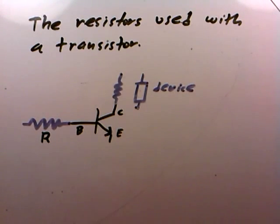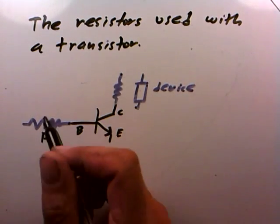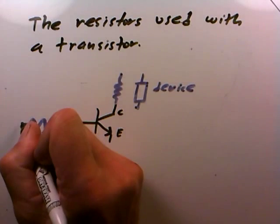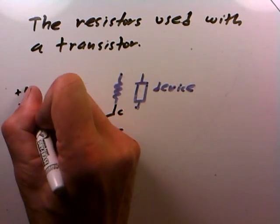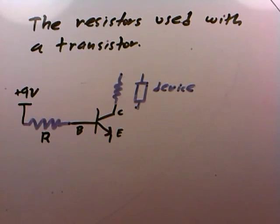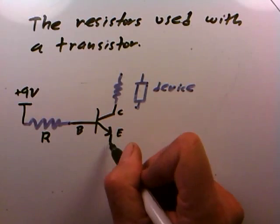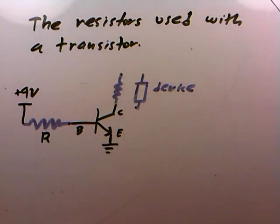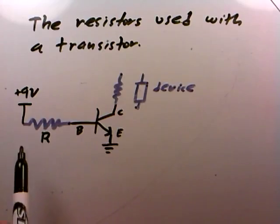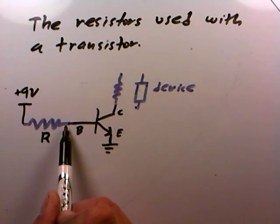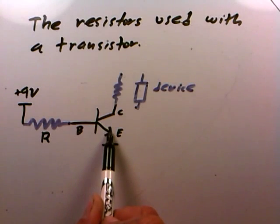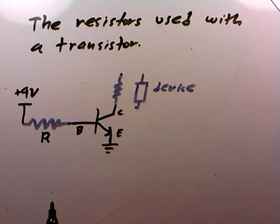Now, in some of the previous videos that we showed, we were turning the transistor on by connecting this resistor right here to something as high as 9 volts. And so what we want to look at here is just what effects does it have on the transistor. And remember that in all of our uses here, we're going to ground this emitter right here.